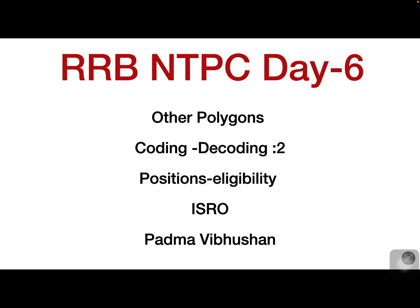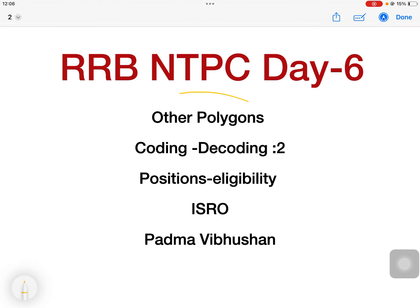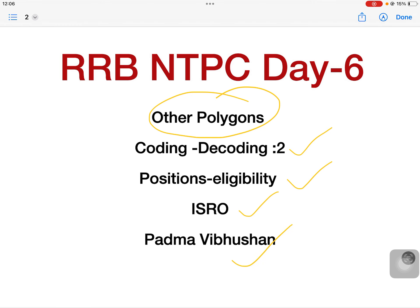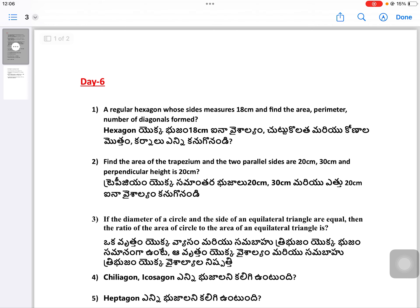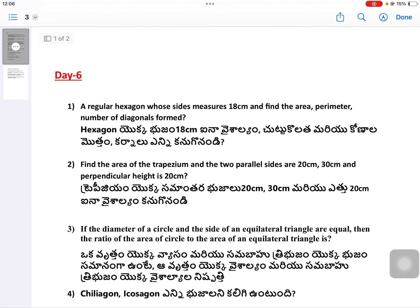Please join the link below the description. There are polygons with different information — coding and decoding in seconds. Hexagon, 11 centimeters. Regular hexagon whose sides measure 18 cm — find the area, perimeter, and number of diagonals formed.